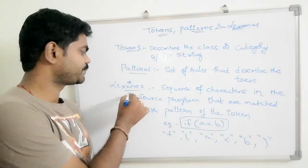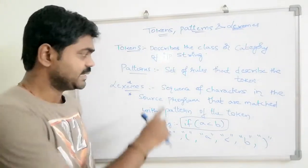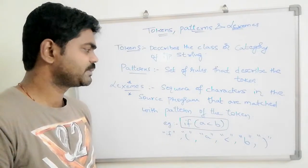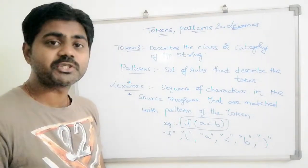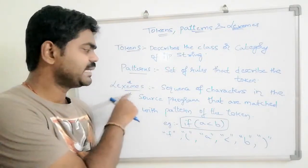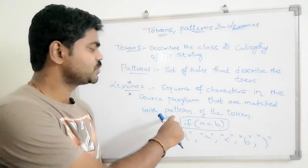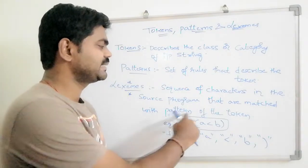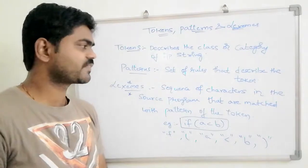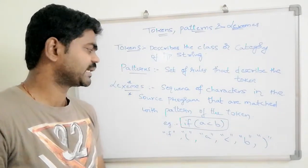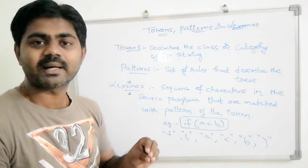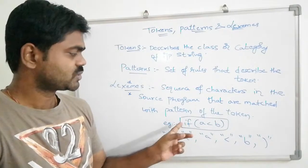Out of these three, the most important one is lexemes. Lexemes is a sequence of characters in the source program that are matched with the pattern of the token. If you see the lexemes, it covers the two concepts: pattern and token.